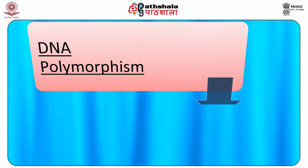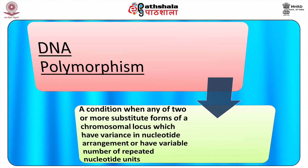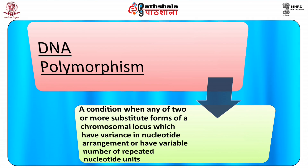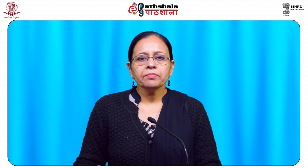DNA polymorphism is actually a condition when any of two or more substitute forms of a chromosomal locus have variance in nucleotide arrangements or have variable number of repeated nucleotide units. Alternatively, DNA polymorphism can be defined as presence of multiple alleles of a marker at a distinct locus. When such locus exhibits a large number of variants, as many as hundreds, they are called hypervariables. Many DNA polymorphisms have applications in genome mapping studies and these are called DNA markers.